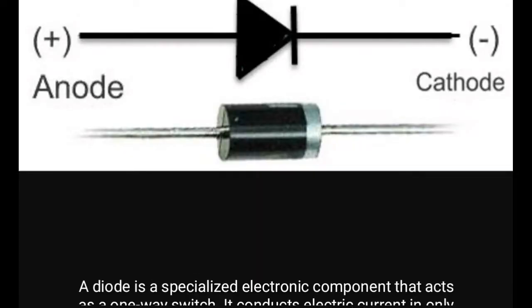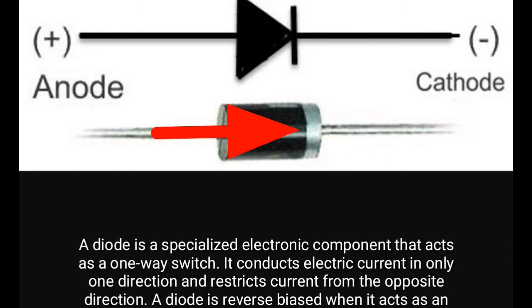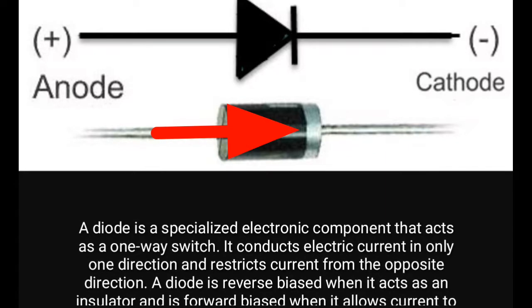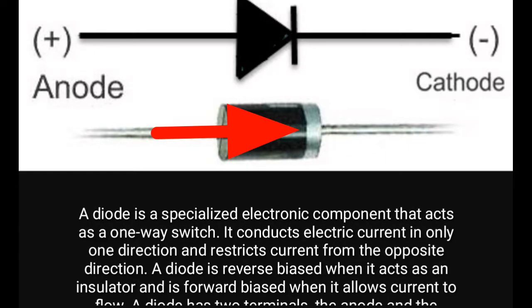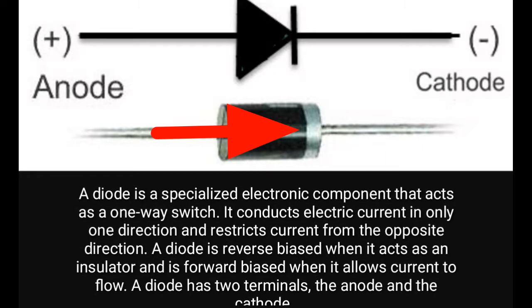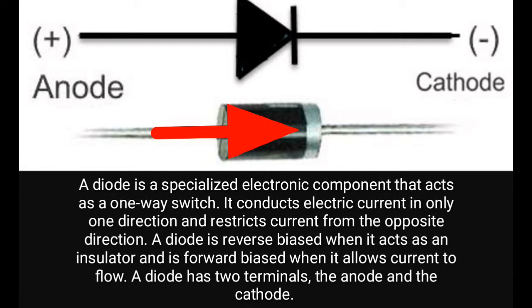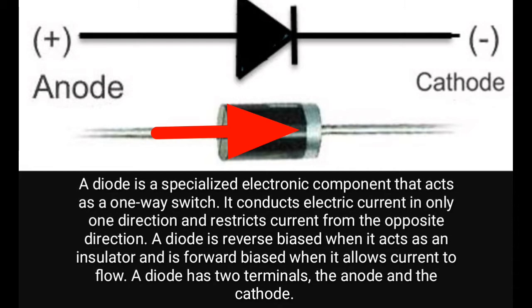A diode is a specialized electronic component that acts as a one-way switch. It conducts electric current in only one direction and restricts current from the opposite direction.